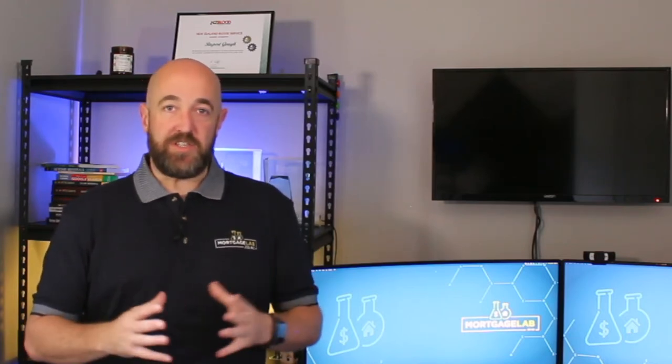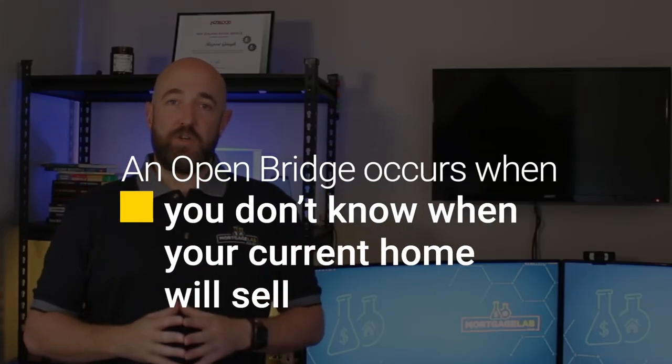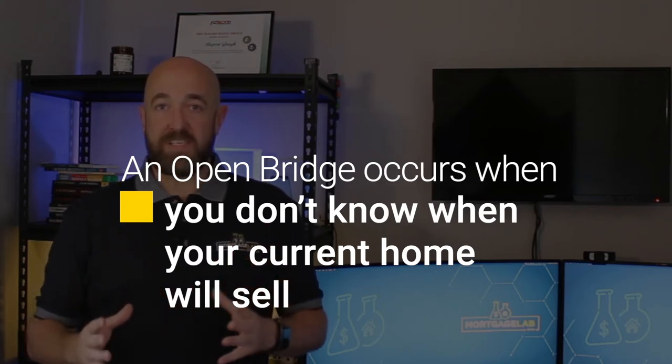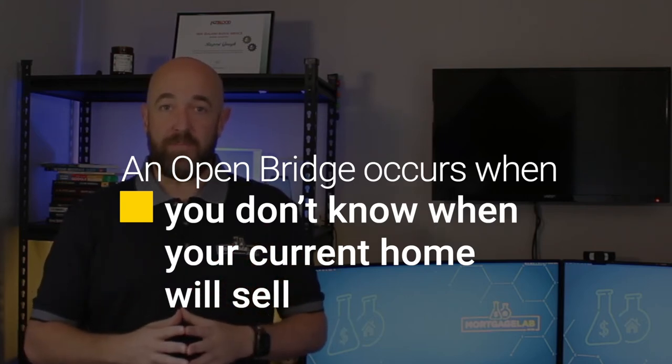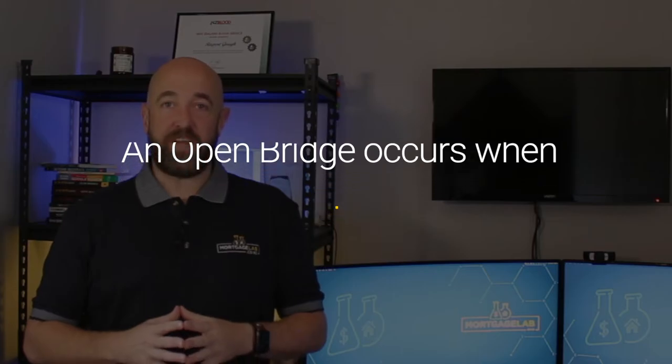There are two types of bridging loans, an open bridge and a closed bridge. An open bridge allows you to purchase a new home with no specific date of when you've sold your old home. Generally, these loans specify that you need to sell your old house within 12 months.